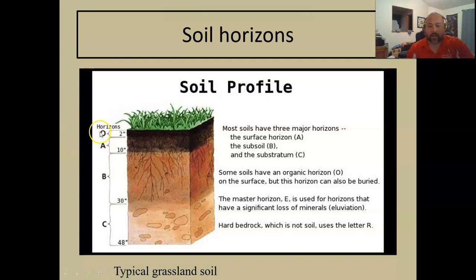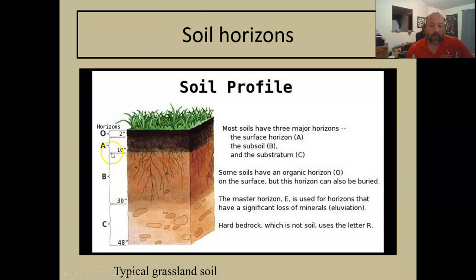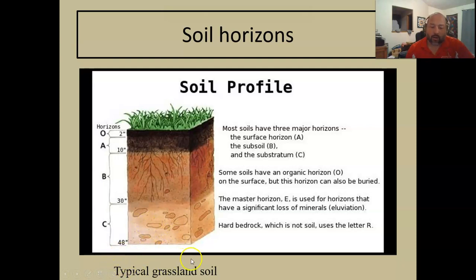Looking at a typical grassland soil, we've got a couple inches of organic surface litter — the O horizon — then our A horizon topsoil, our B horizon subsoil, our C horizon of weathered bedrock or parent material, and then the R horizon for bedrock.